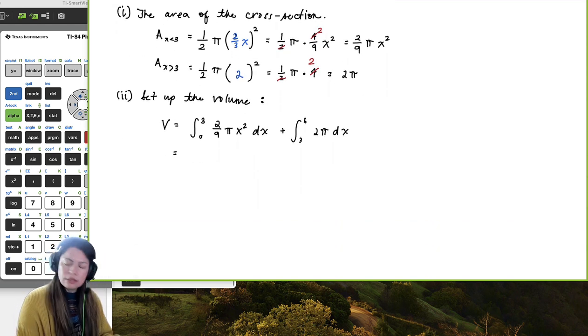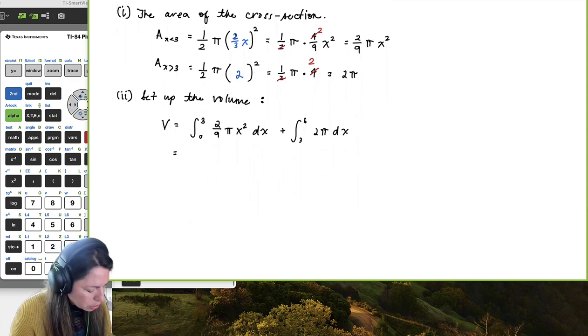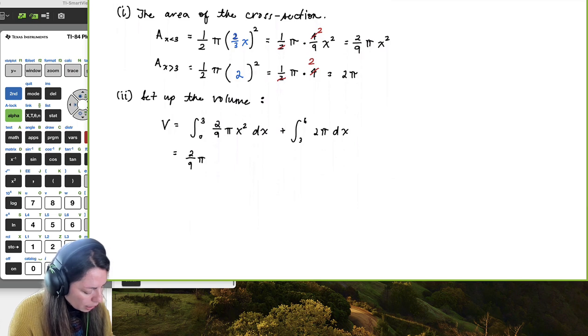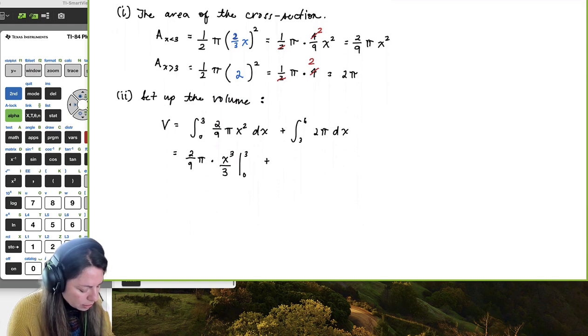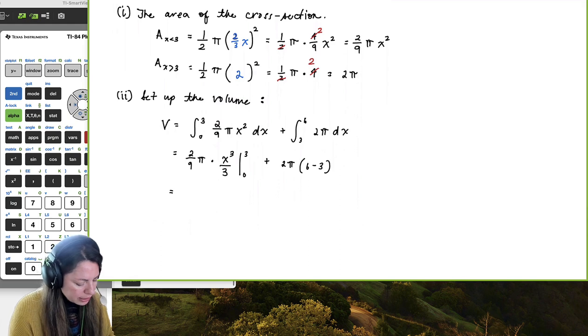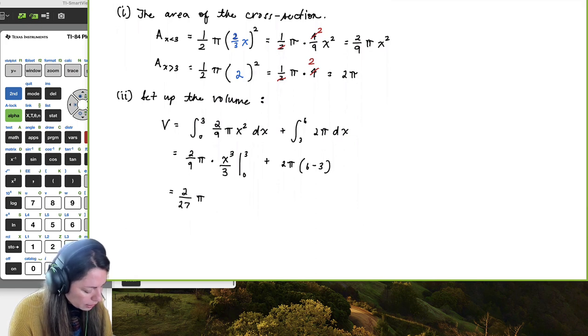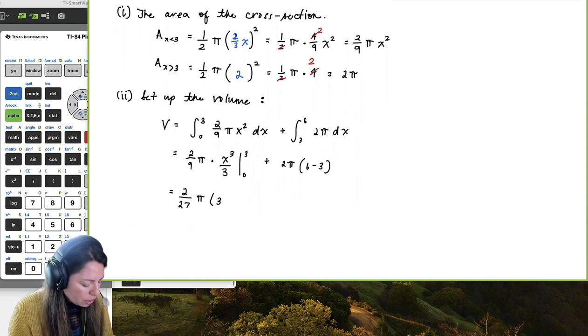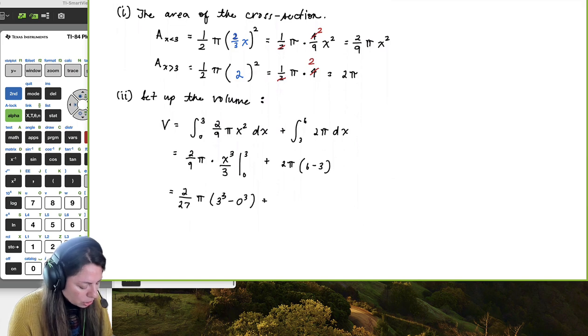Okay, so we know this is simple integration, a constant multiple rule, two-ninths pi, and then the antiderivative of x squared is x cubed over three, so we'll have times x cubed over three, evaluated from zero to three, plus two pi, constant multiple rule, and then that property, so we'll have six minus three over here. Okay, what I'm going to go ahead and do is kick this one-third out and get two-twenty-sevenths pi, and then times, evaluating the limits of integration, we'll get three cubed minus zero cubed, plus two pi times three.